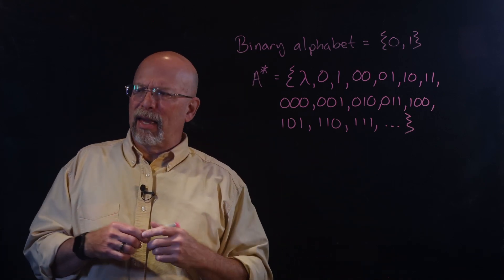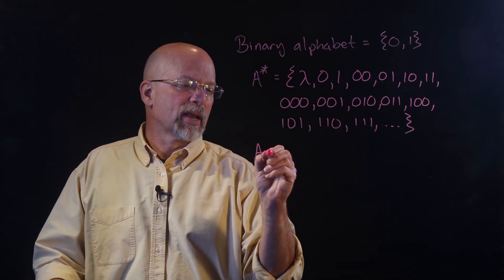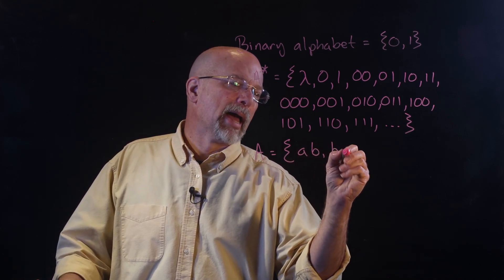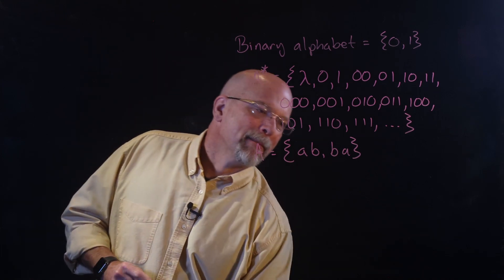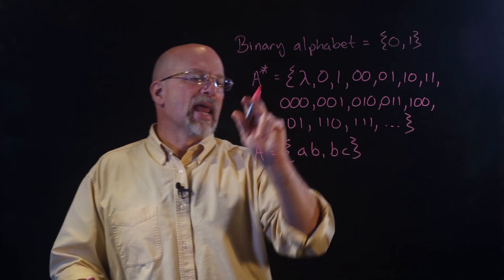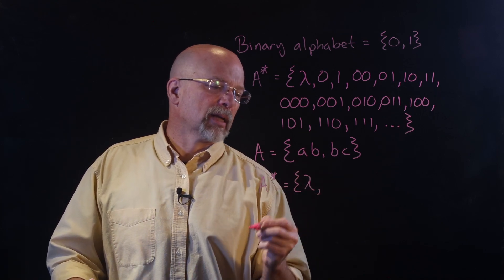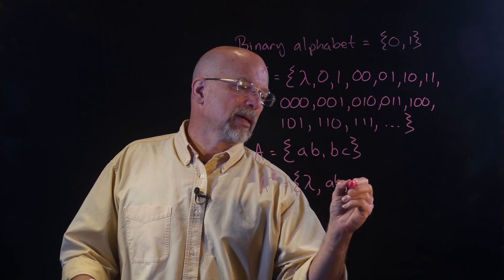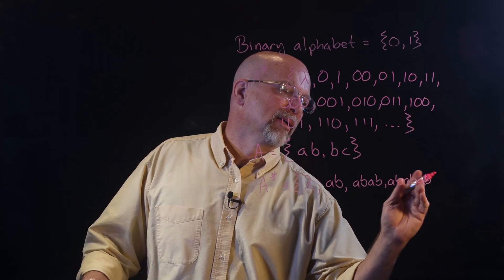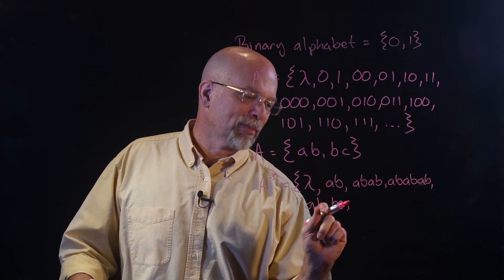Let's assume we have an alphabet consisting of just the elements 'AB' and 'BC.' Let's look at A-star. A-star first has lambda, the empty string. It has 'AB,' it has 'ABAB,' it has 'ABABAB,' and then 'ABBC,' 'ABBCBC,' and so on.